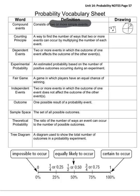Counting principle, that's a way to find the number of ways that two or more events can occur by multiplying the number of each event. So that could be like two times two times two, which would give you eight.